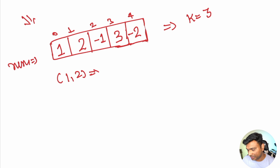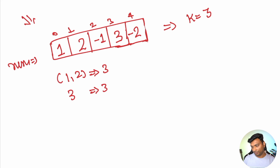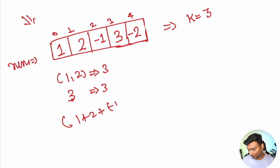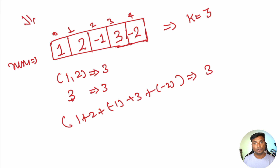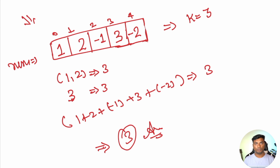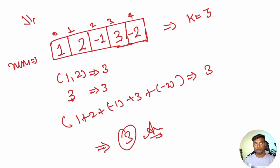For the array [1, 2, -1, 3, -2] with k=3, the subarrays are: [1, 2] with sum 3, [3] alone, and the entire array 1+2+(−1)+3+(−2)=3. So the total count is 3. A brute force approach would find all subarrays and count those summing to k, which runs in O(n²), but can we do better?